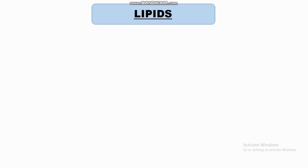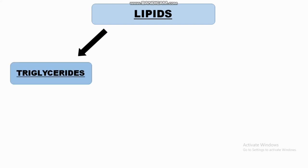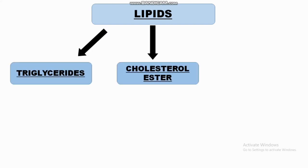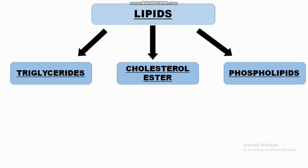In this video tutorial we are going to discuss about digestion of lipids. An adult intakes 50 to 150 grams of lipids per day, among which 90% is triglycerol, also known as fat. The dietary lipids are in the form of triglycerides, cholesterol esters, and phospholipids.